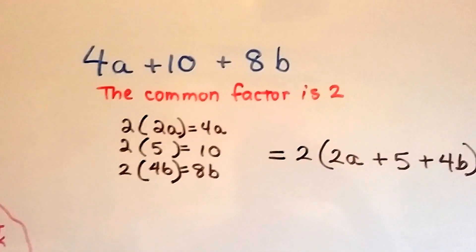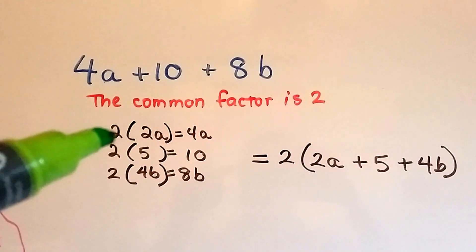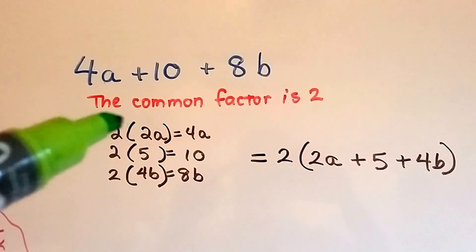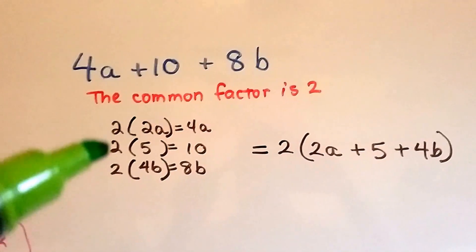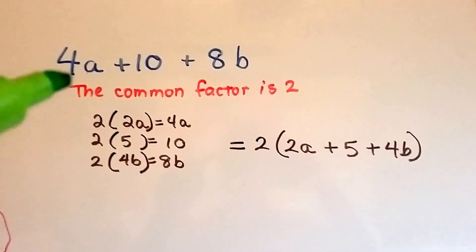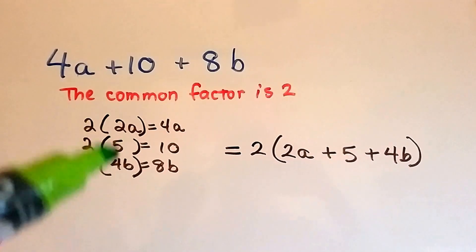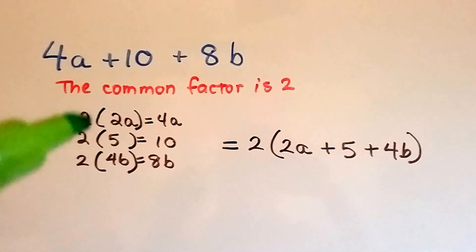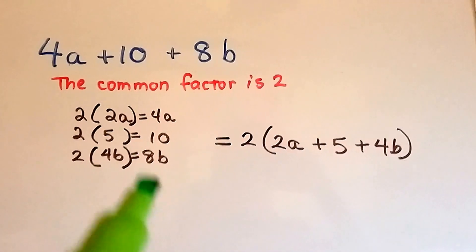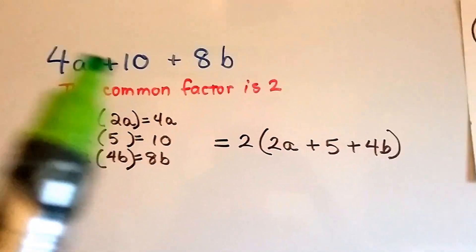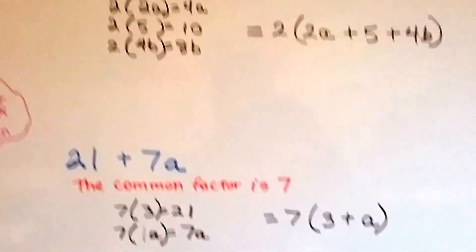Let's try it again. For this one, the common factor is 2. So 2 times what is 4a? 2 times 2a. 2 times what is 10? 2 times 5. 2 times what is 8b? 2 times 4b. So now we know that 2 goes in front of the parentheses, right here, and we know it goes inside the big parentheses. 2a plus 5 plus 4b. 2a plus 5 plus 4b. And the 4a plus 10 plus 8b is our original, so we know we got it right.